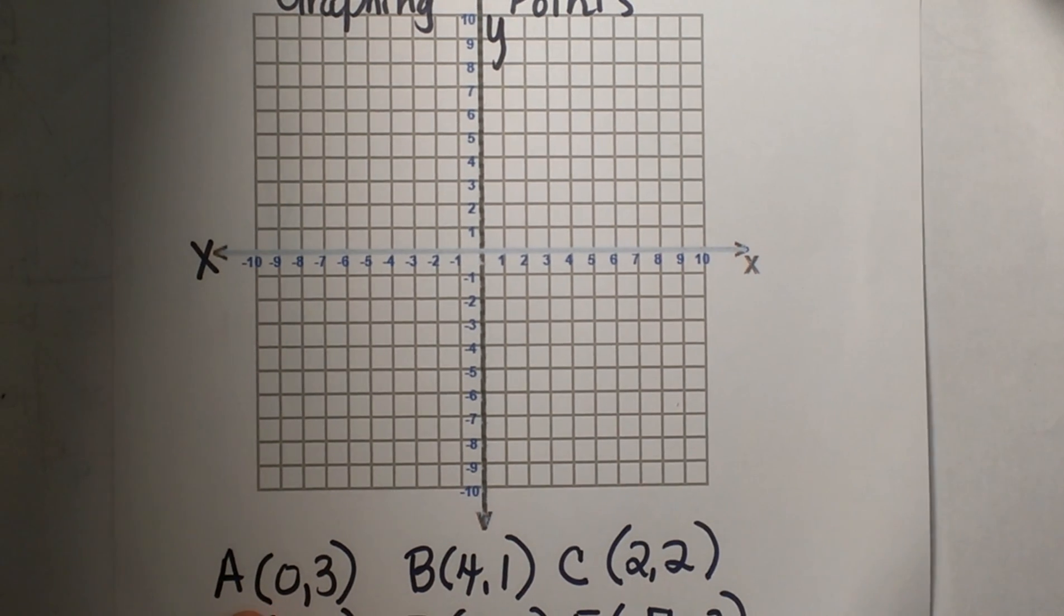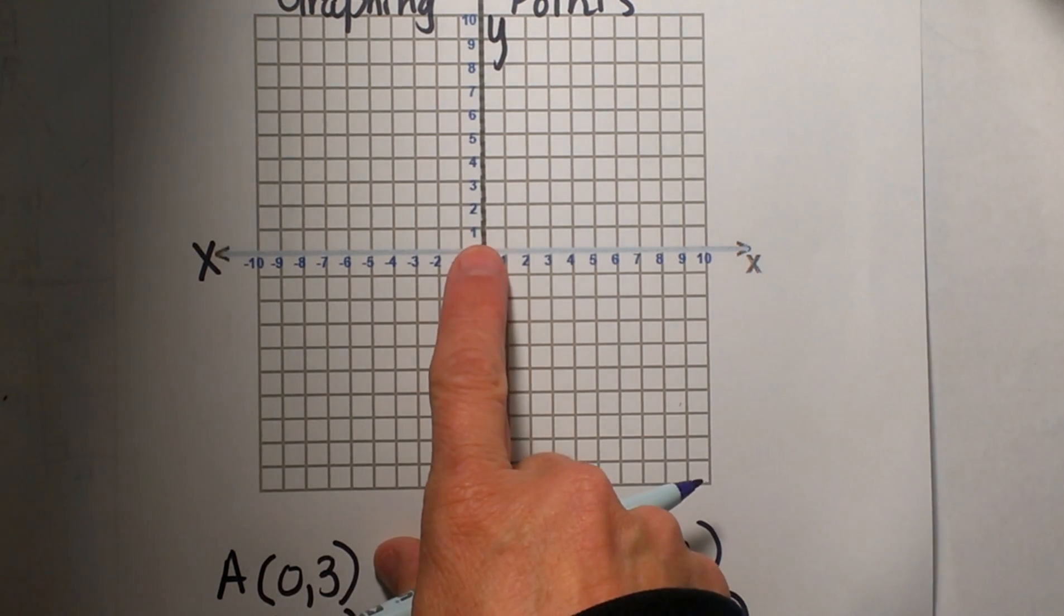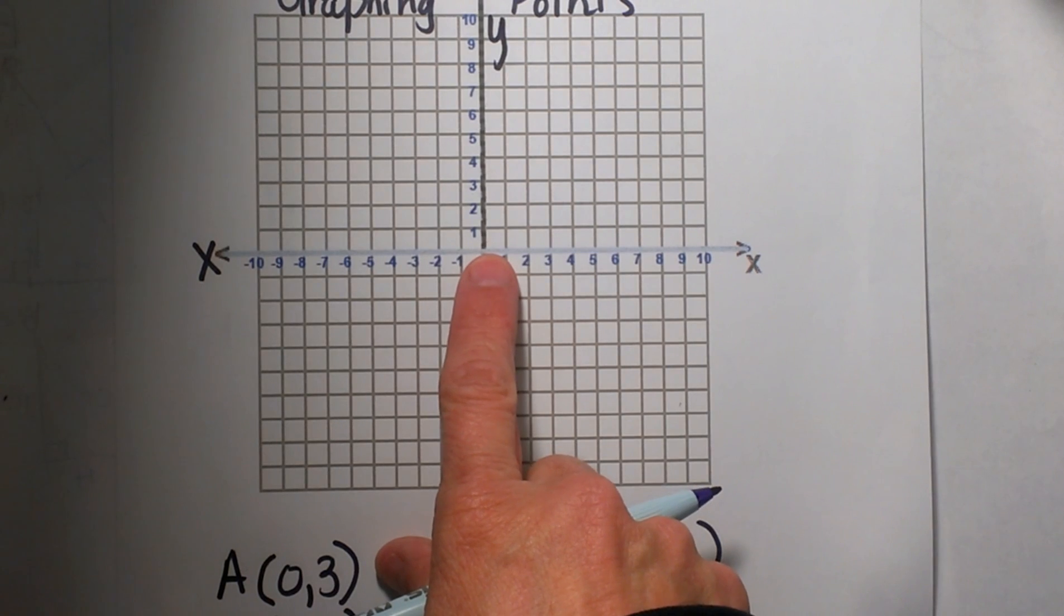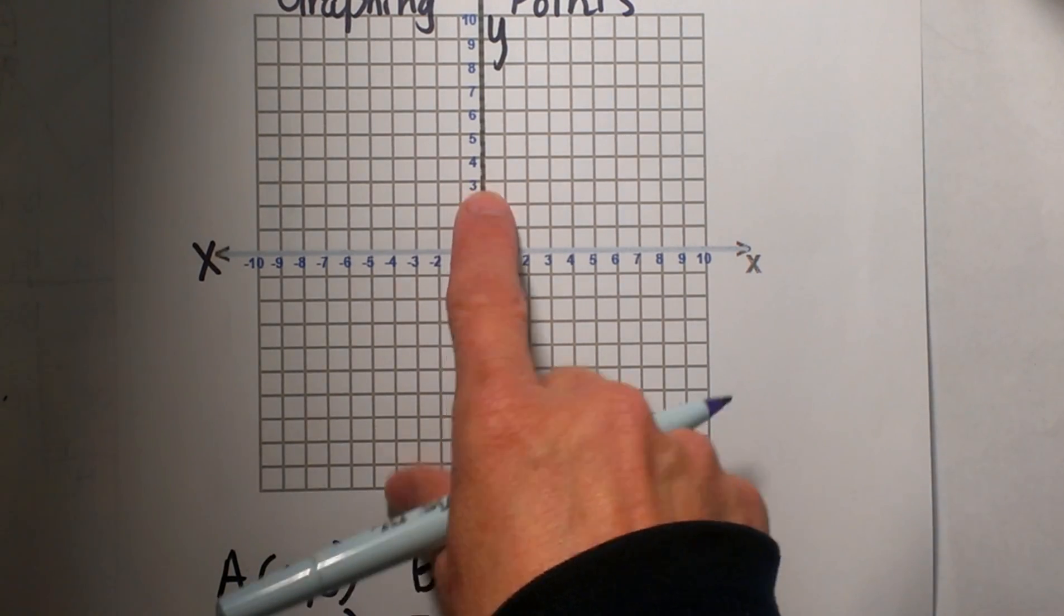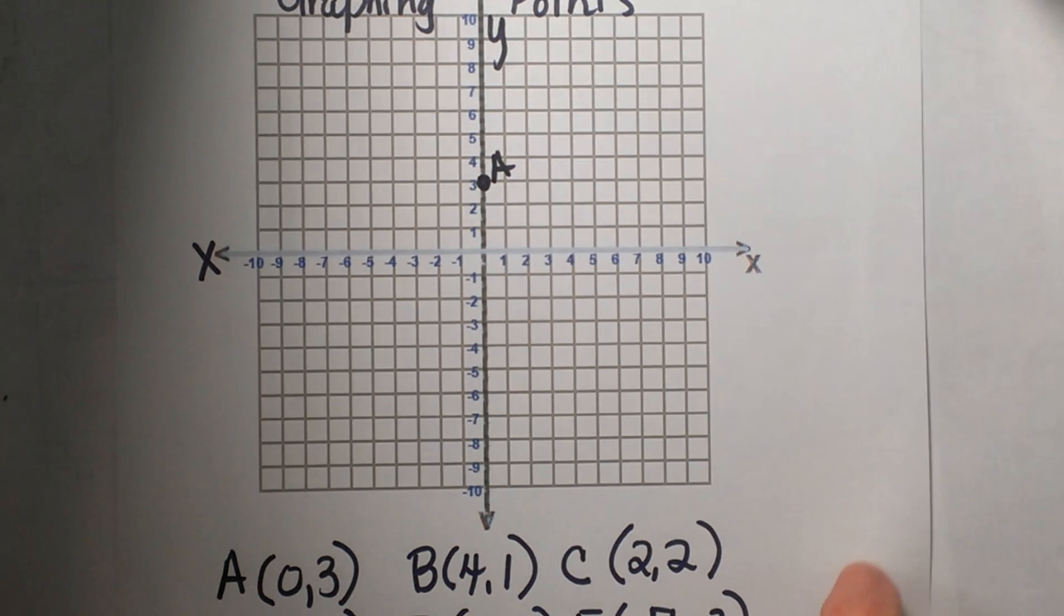So let's start with this first one. A is (0,3). So the first coordinate is always my x direction. So from the origin you count 0 to the left and to the right, but then we are going to count 3 up the y direction. So that point A is going to plot right here on the y-axis.